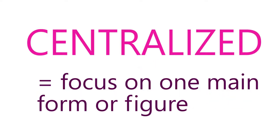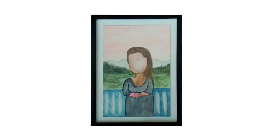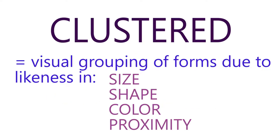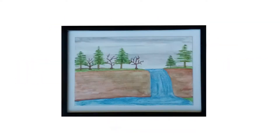The first type of composition is centralized. Centralized pieces focus on one main form or figure. Second, we have clustered compositions. In a clustered composition, there is visual grouping due to likeness in size, shape, color, or proximity.